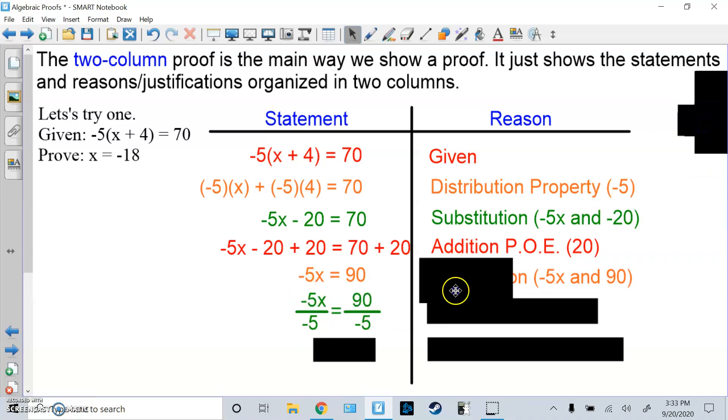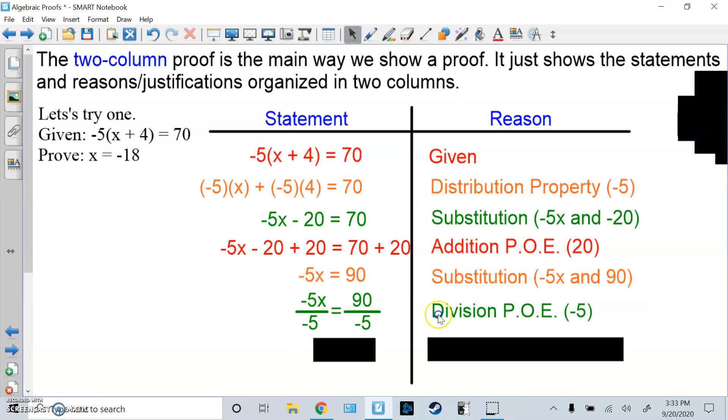Then here I divide both sides by -5, so let's call it the division property of equality. Then I'm going to reduce, meaning you do substitution. -5X over -5 is the same thing as X. 90 by -5 is -18. That's what they wanted, so we are done. So it's the same math that you do, but with all the reasons and justification.